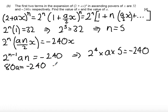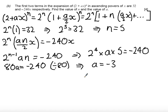Dividing both sides by 80, we get a equals -3.